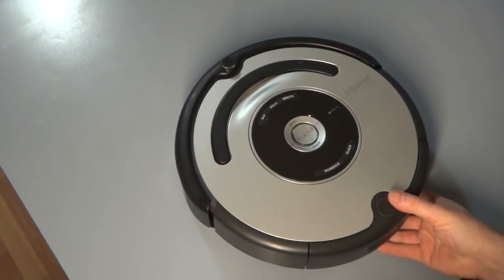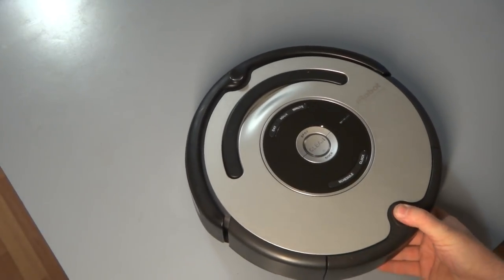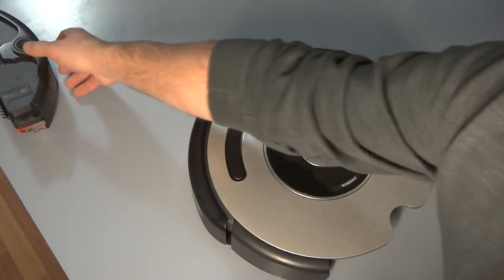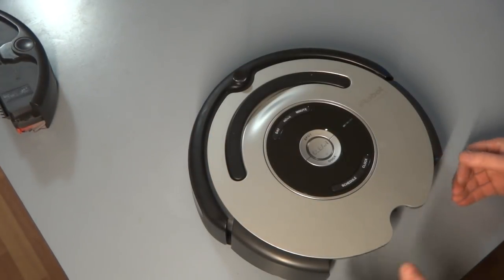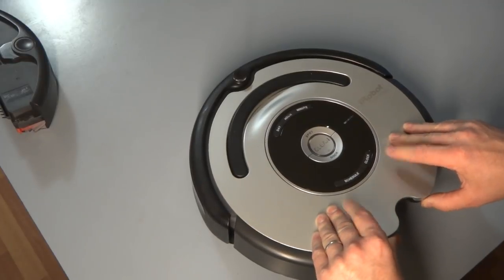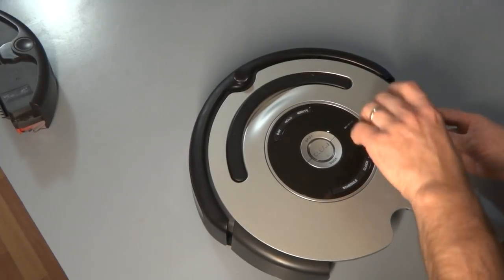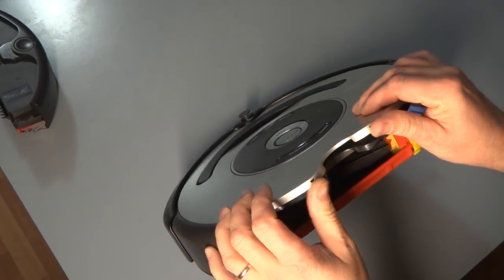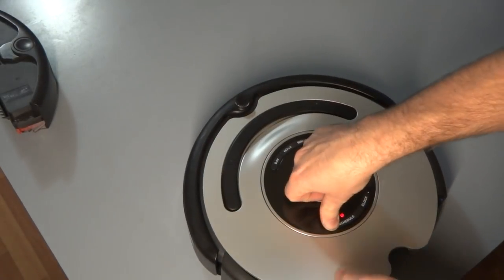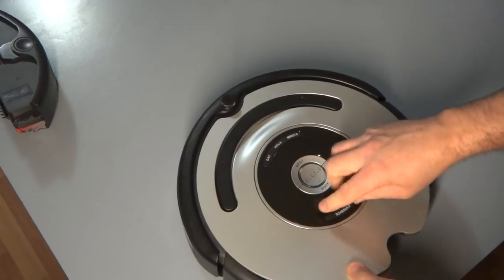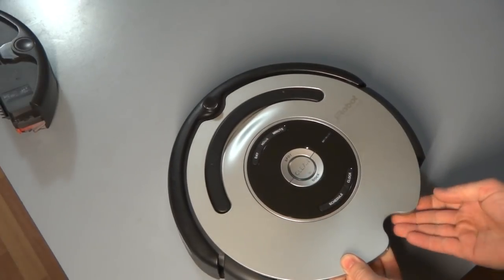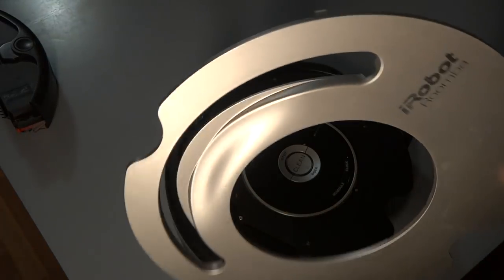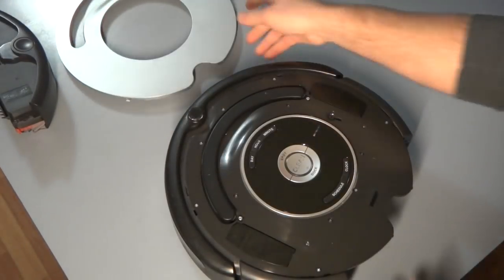So first you want to do is take it apart. Just disassemble it. Just remove the dustbin. So we just remove the dustbin. And also next thing is removing the faceplate. So to remove the faceplate, you just got to try to pry it up a little bit here on the sides. Just kind of put your fingers inside. And just lift it up. It should snap off, no problem.